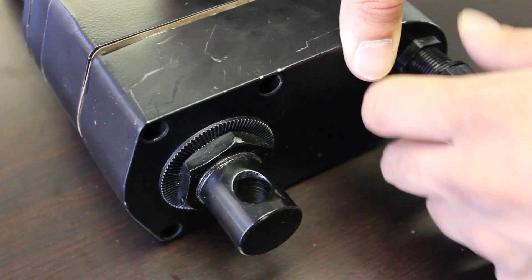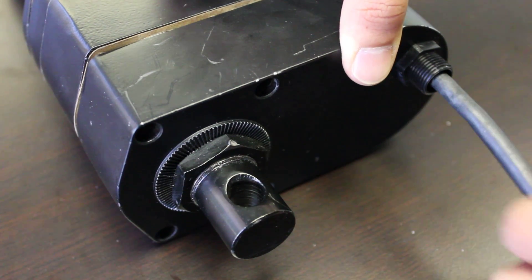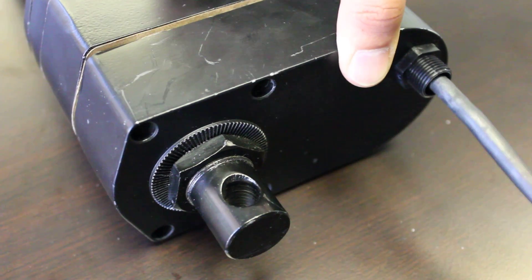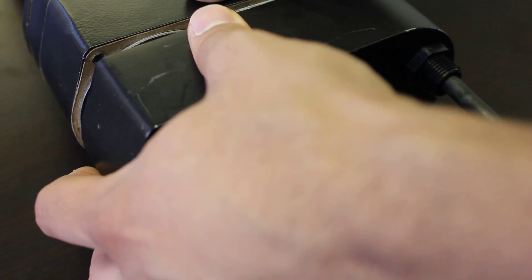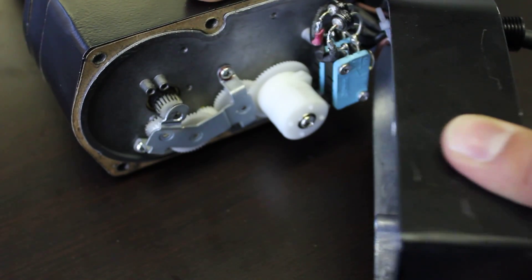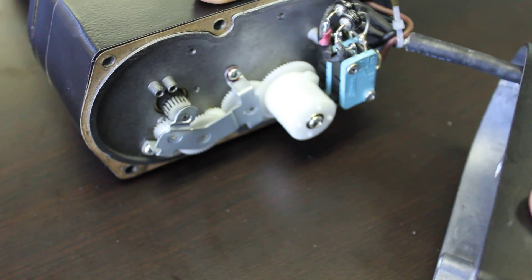So you would unscrew this. I've already done it here as well, and you'd move it down. Once that's done, you can remove the bottom end of the actuator.